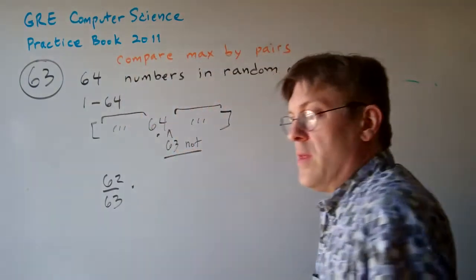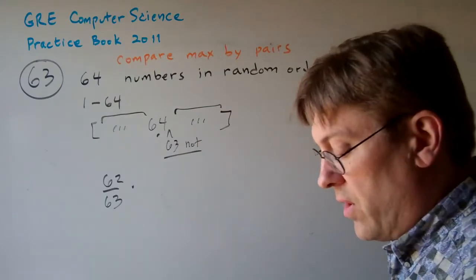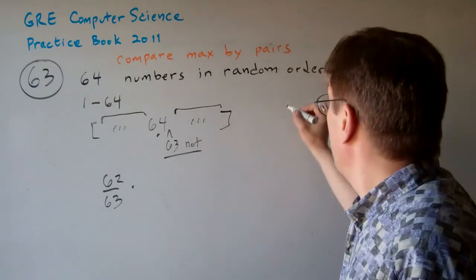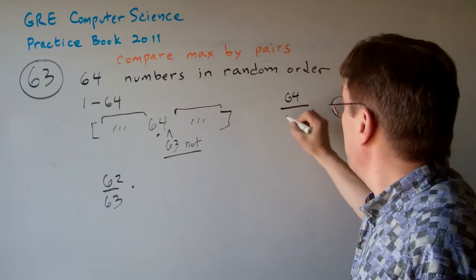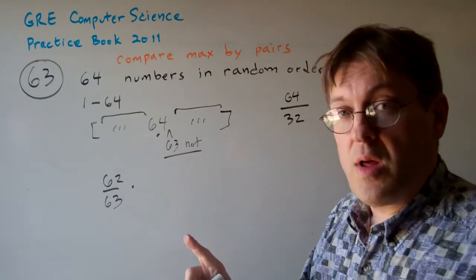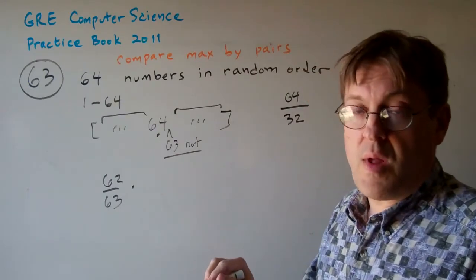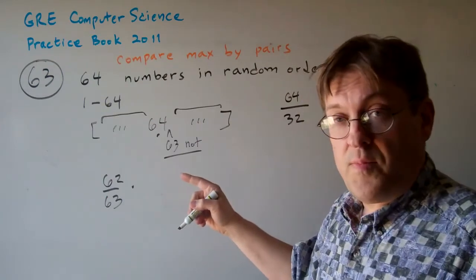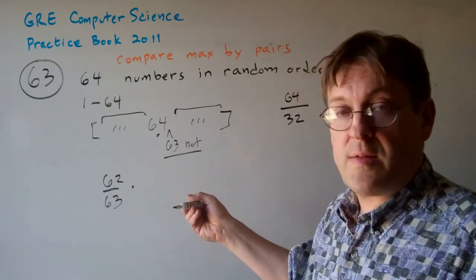Now when the thing reduces to the next level, there's going to be 32. So we start out with 64 and now it's going to be reduced down to 32 places. Well, 64 is going to be in one of those places. The other 31 places could be, 63 might still be in there.